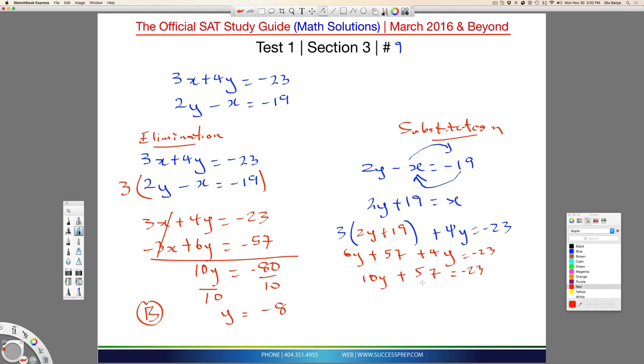Obviously, this 57 will go over here because like terms. So, plus 57 will become minus 57 when it comes here. So, it's 10y equal to minus 23 minus 57, which is negative 80. 10y divided by 10 on both sides. So, y again is negative 8.